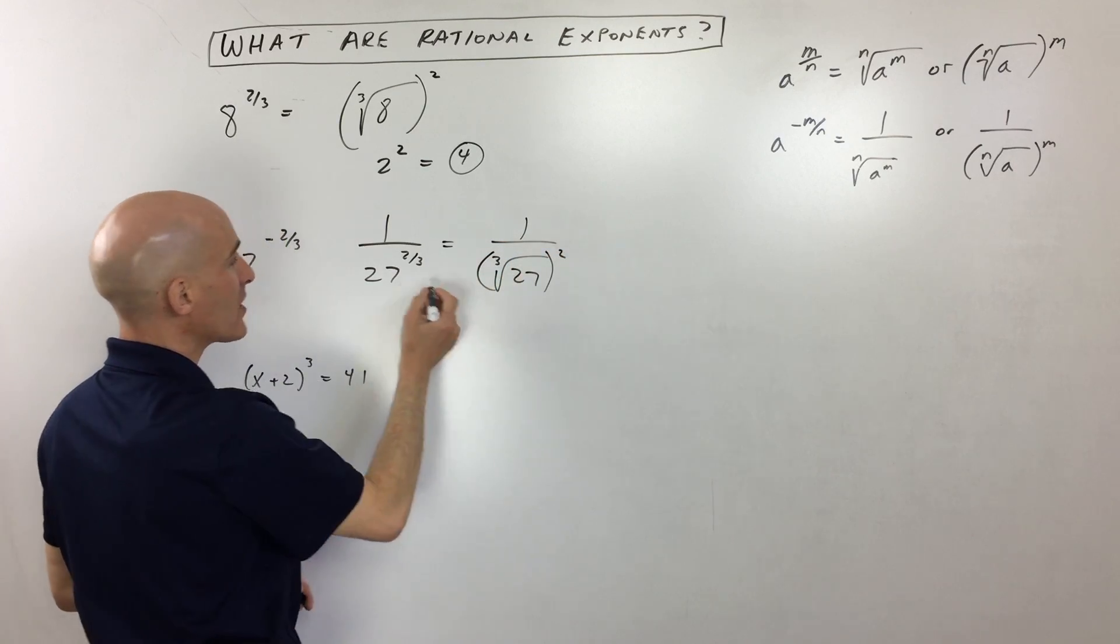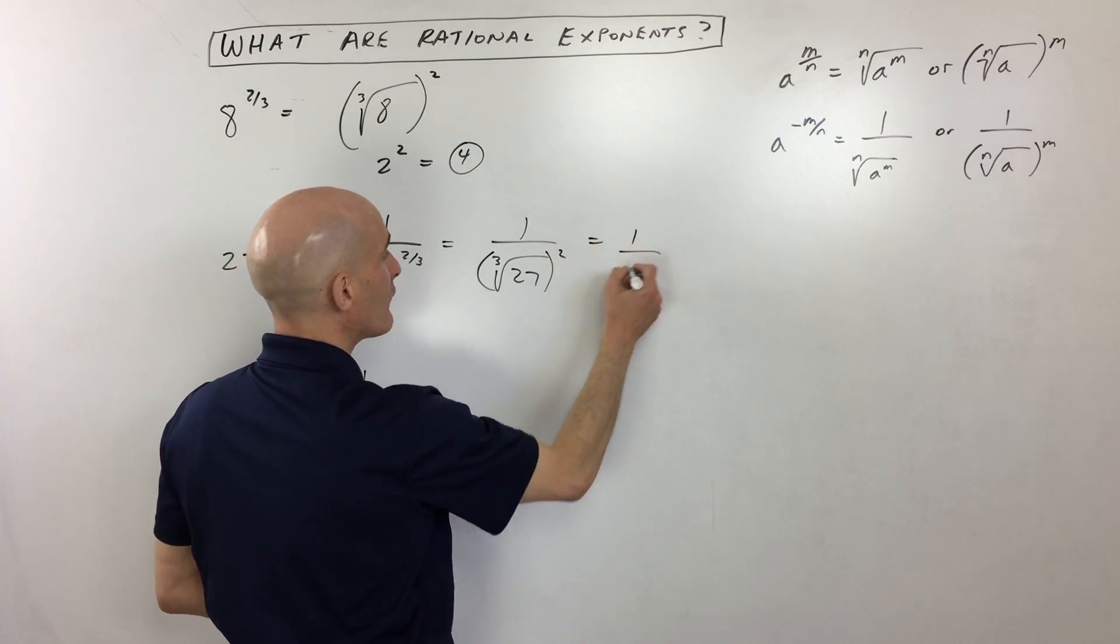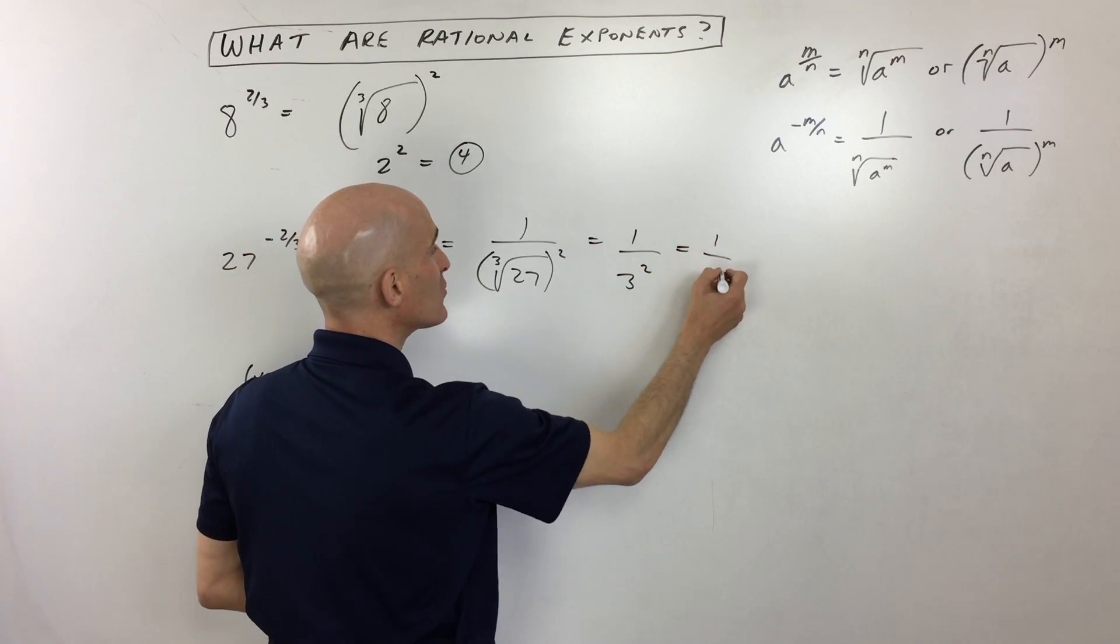And then the quantity squared. So what number times itself 3 times is 27? That's going to be 3. So we have 1 over 3 squared, which equals 1 over 9.